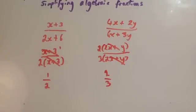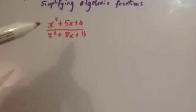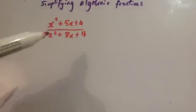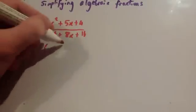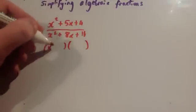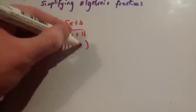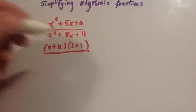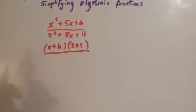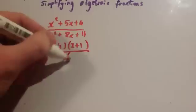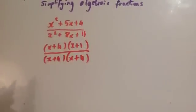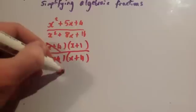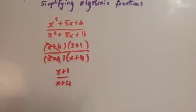Let's look at another example: x squared plus 5x plus 4 over x squared plus 8x plus 16. These are two quadratics, so let's factorise both. The top line factorises to (x plus 4)(x plus 1), and the denominator factorises to (x plus 4)(x plus 4). The (x plus 4) bracket cancels, leaving the answer x plus 1 over x plus 4.